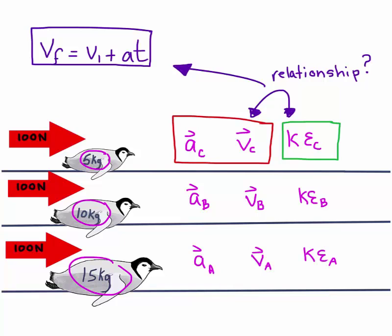We will need to think about this mathematically again. What can we do with this equation? We can first simplify it. We know the penguins start from rest. We can get rid of the initial velocity.